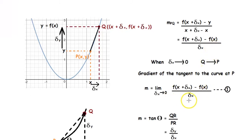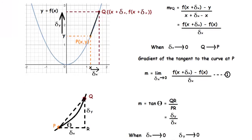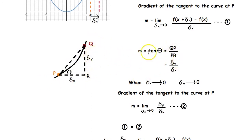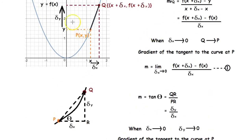So, when delta x tends to 0, the gradient of the tangent at P equals the limit of [f(x + delta x) − f(x)] / delta x as delta x tends to 0 — let's call this equation 1. If you look at the chord PQ closely, you can see a right triangle. The gradient of PQ can be given as tan θ, and tan θ = QR / PR.